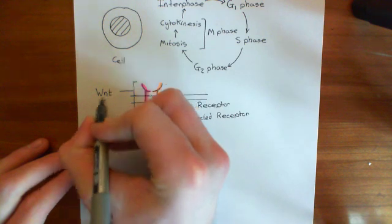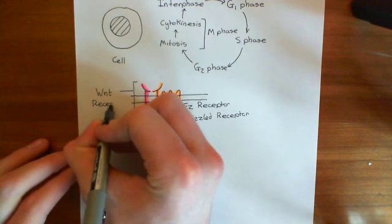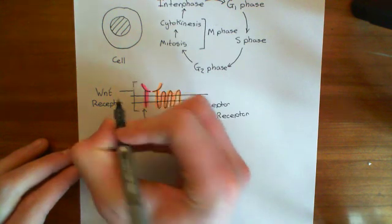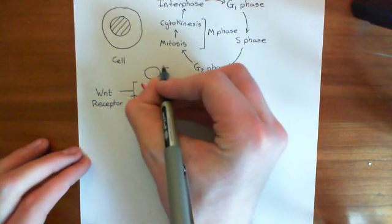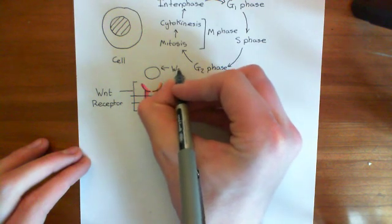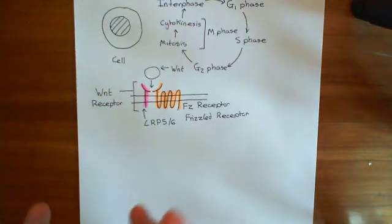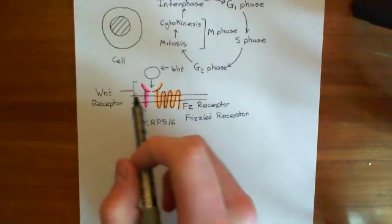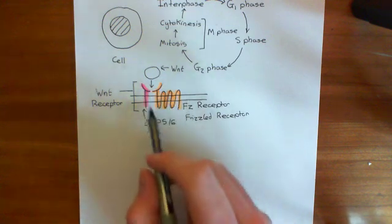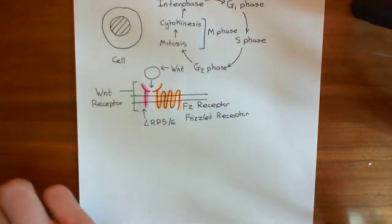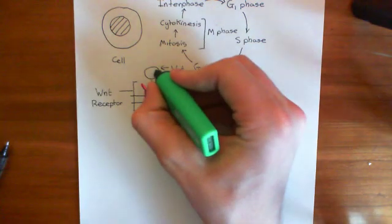If we now spray Wnt onto the cell surface, then here comes along Wnt. This circle represents the Wnt signaling molecule. Wnt is going to come in and bind to the Wnt binding domain, which is made up of a mixture of the LRP5/6 protein and the frizzled receptor protein. I'll color Wnt in green.